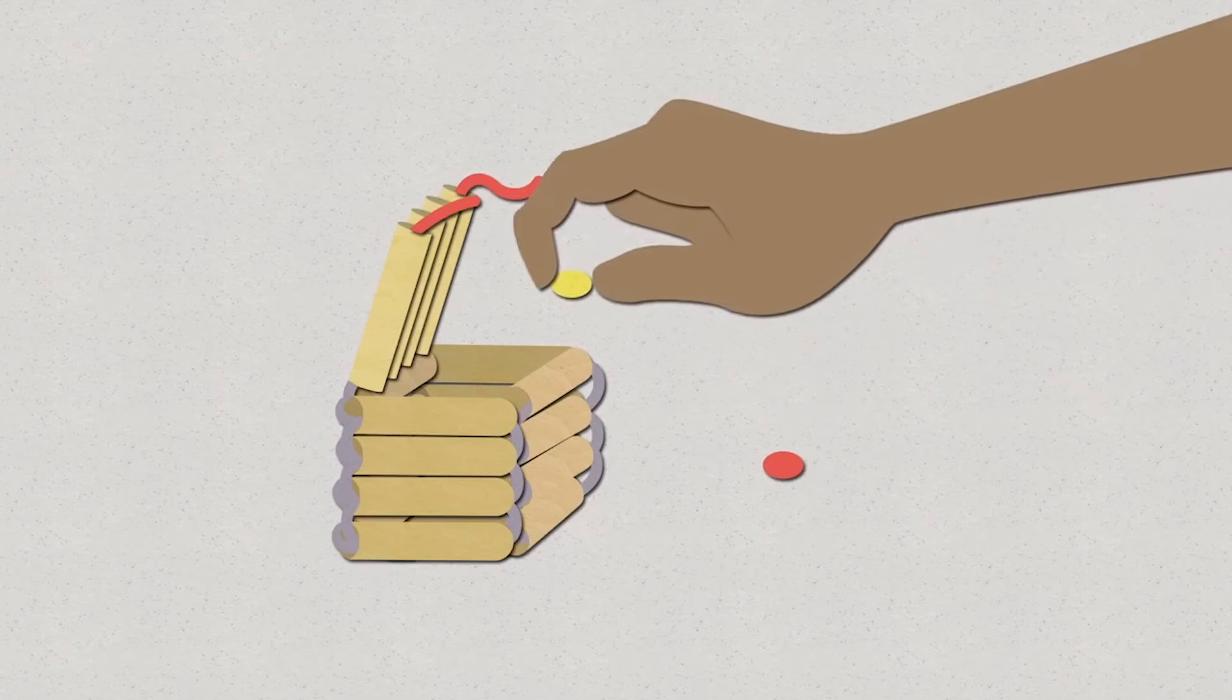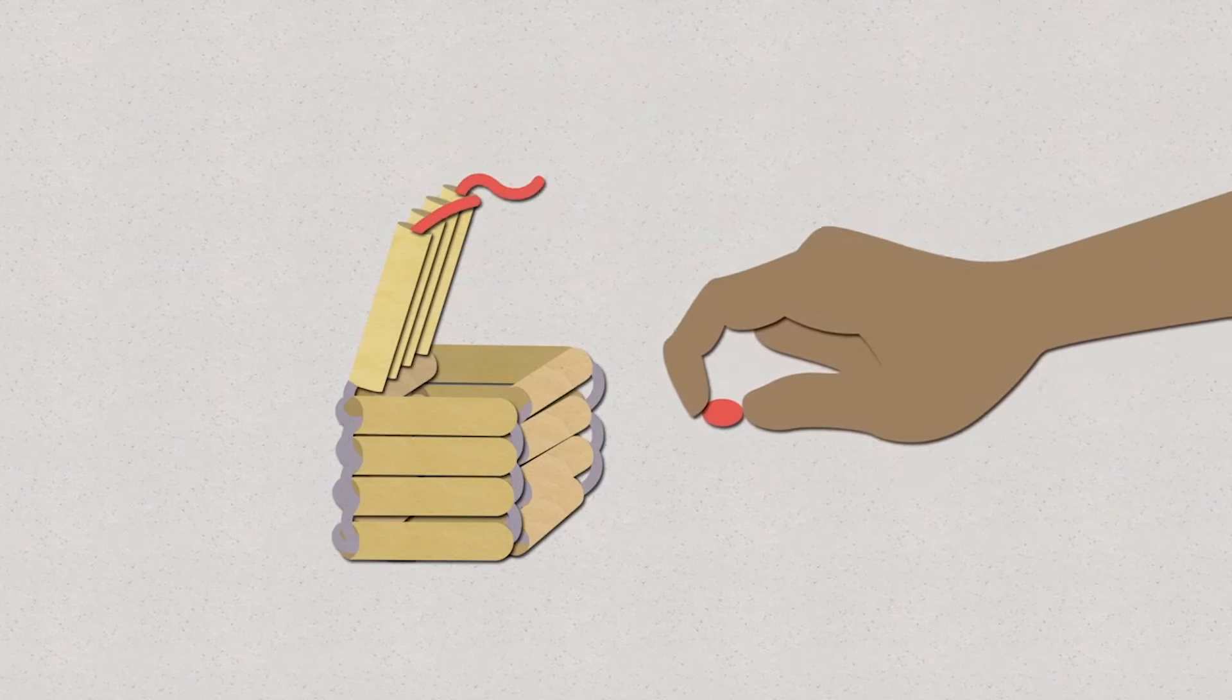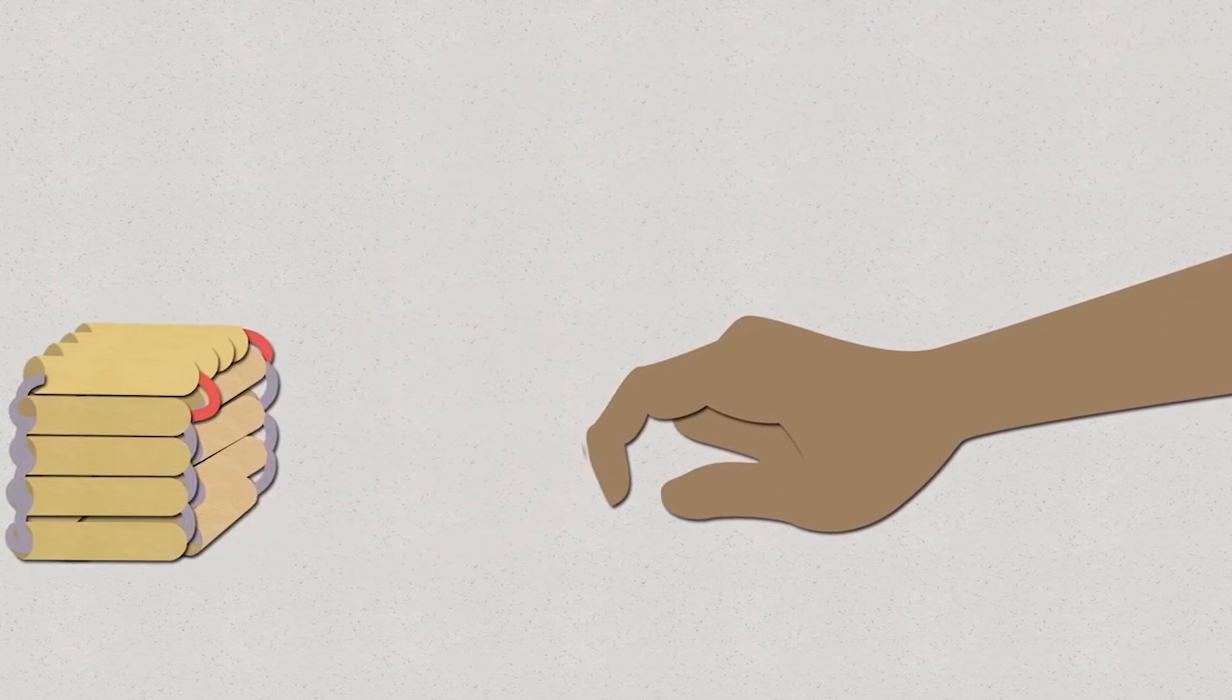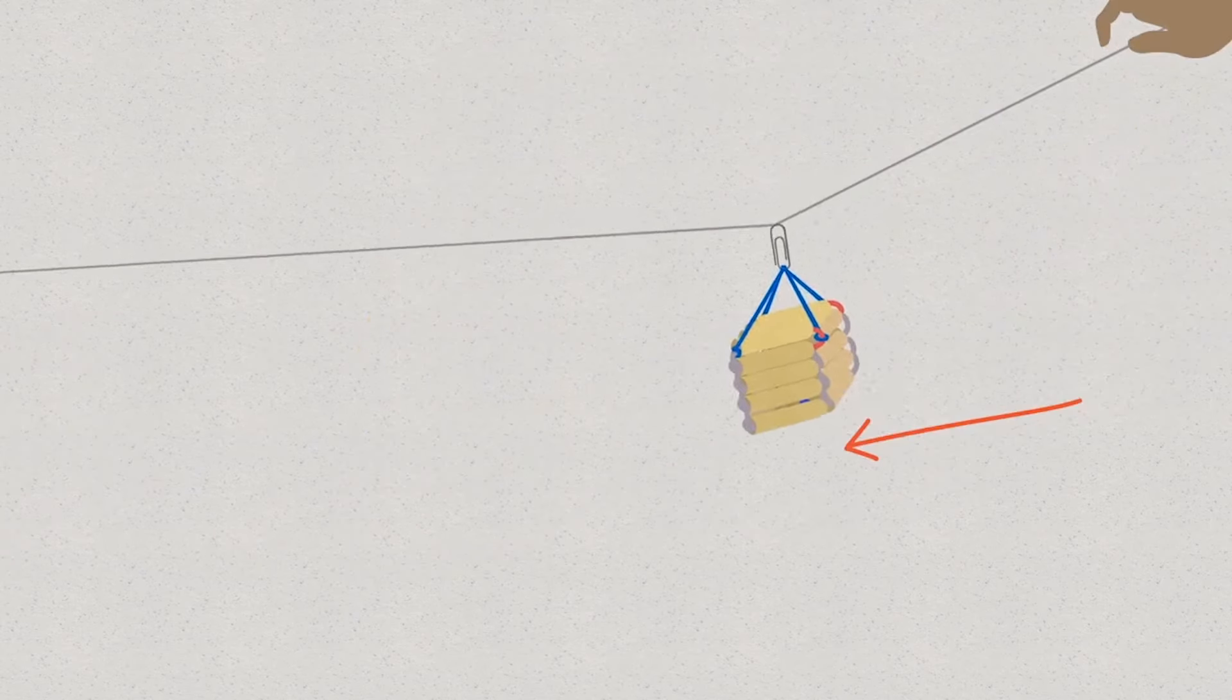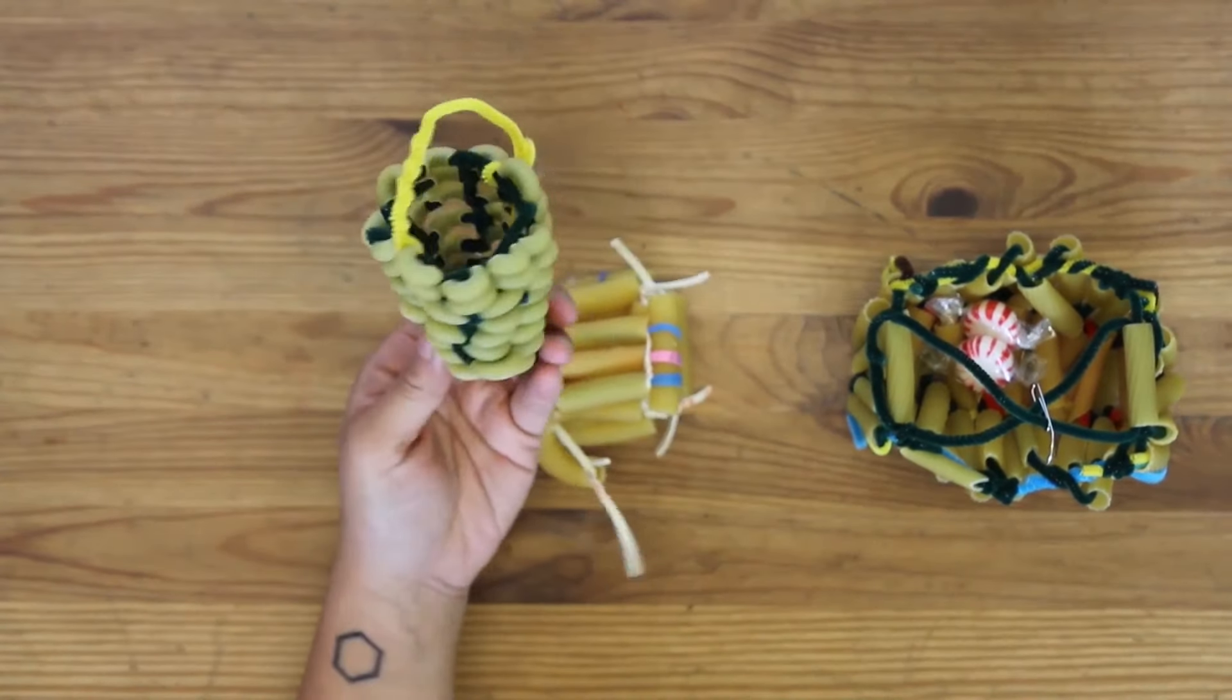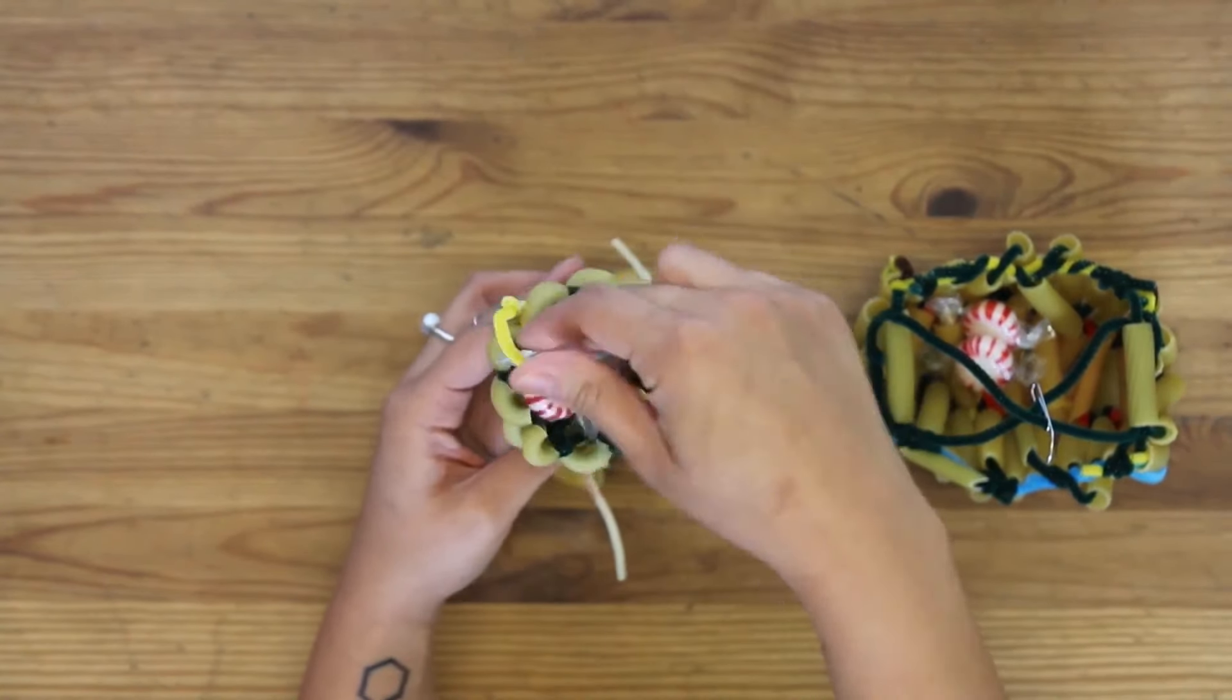In this design challenge, you will be making a DNA origami-inspired structure out of pasta, pipe cleaners, or rubber bands that will hold some medicine that will be delivered along a zip line. Are you ready to create your own DNA origami-inspired delivery system?